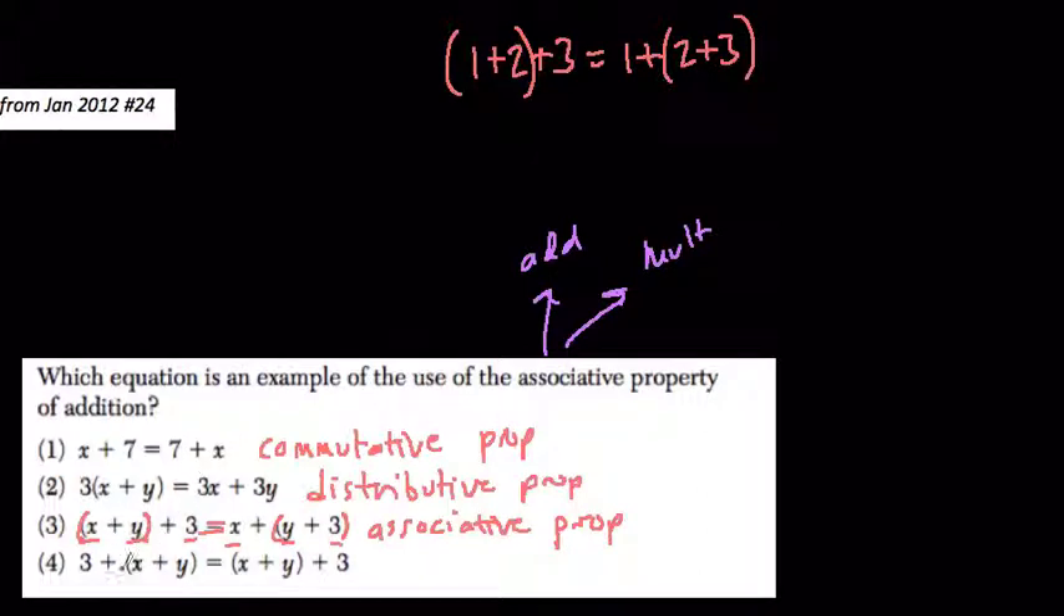Now choice four looks like the associative property because the brackets do move, but if you pay attention, in 3 + (x + y), what's happening is that x plus y moved to first. It moved from here to here.